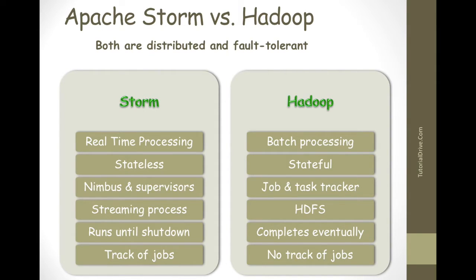Hadoop uses HDFS — the Hadoop Distributed File System — and uses the MapReduce framework to process vast amounts of data, which can take minutes or hours. Storm topology runs until shutdown by the user or due to unexpected failure. In Hadoop, MapReduce jobs are executed in sequential order and completed eventually.